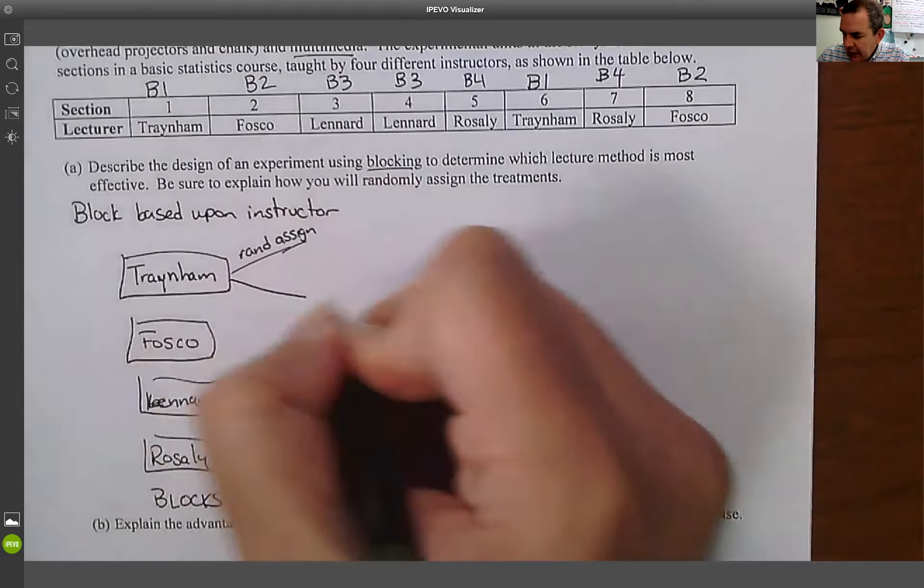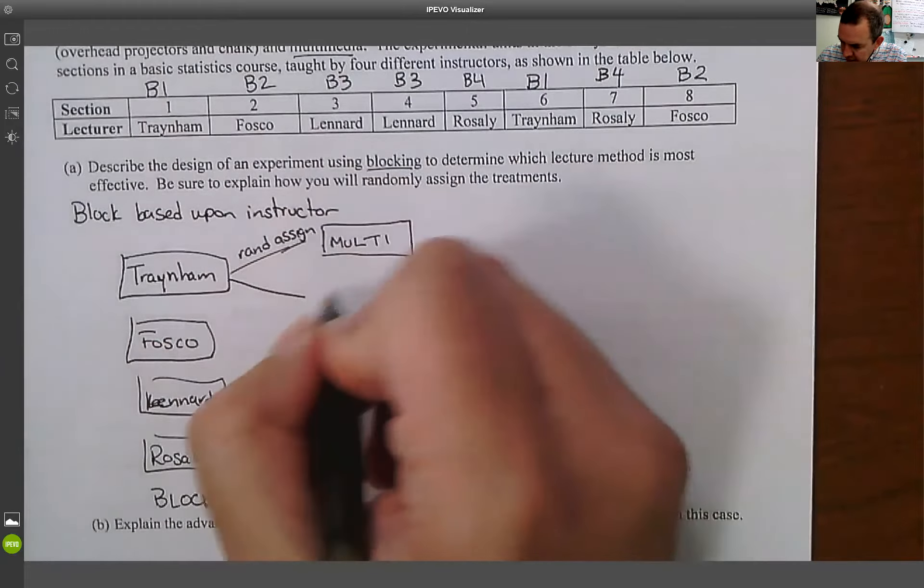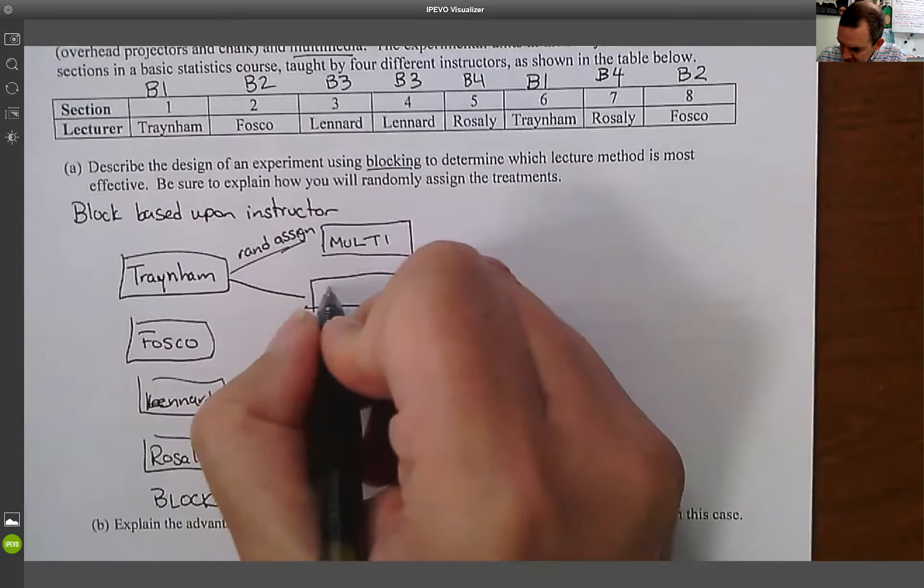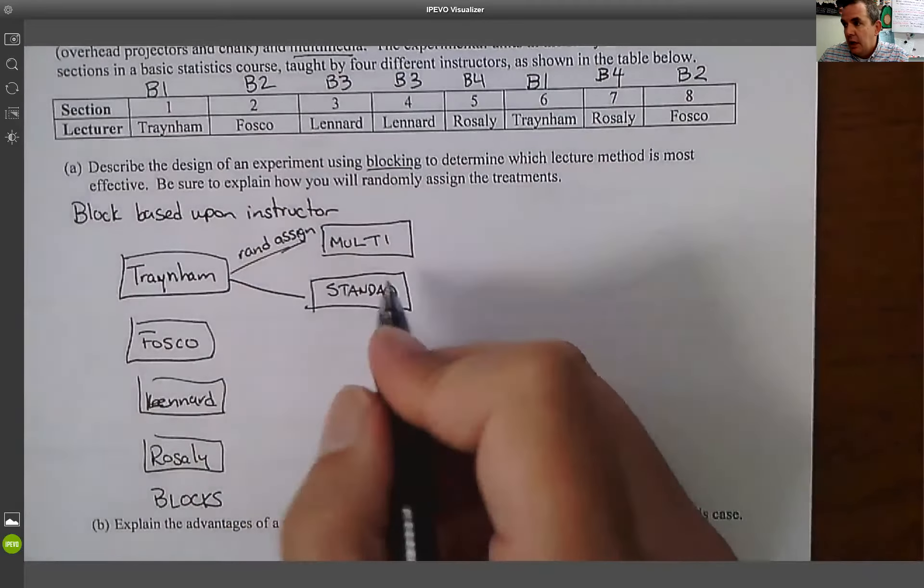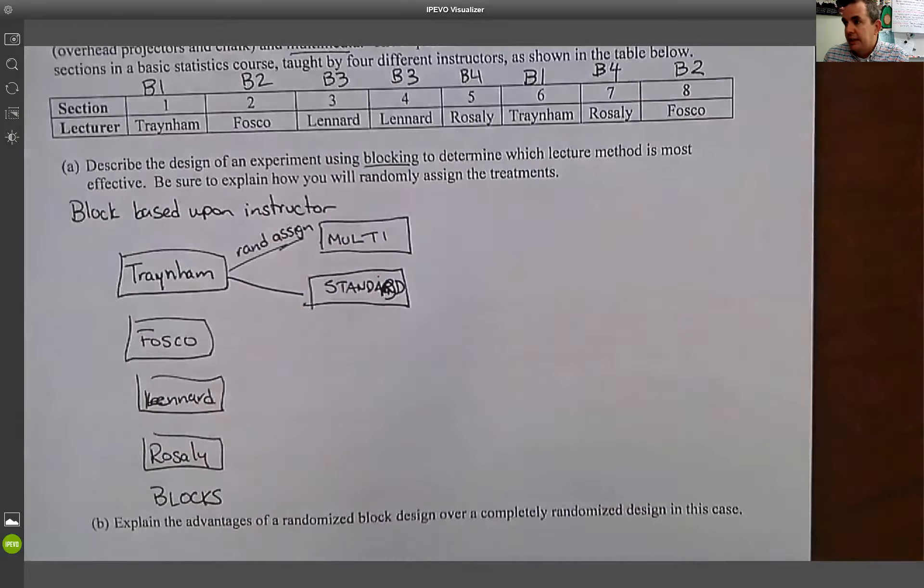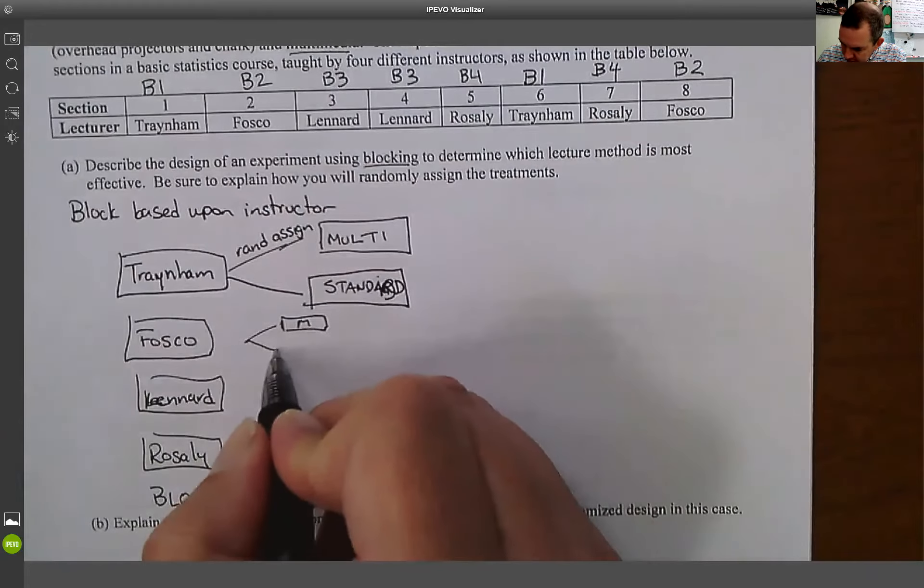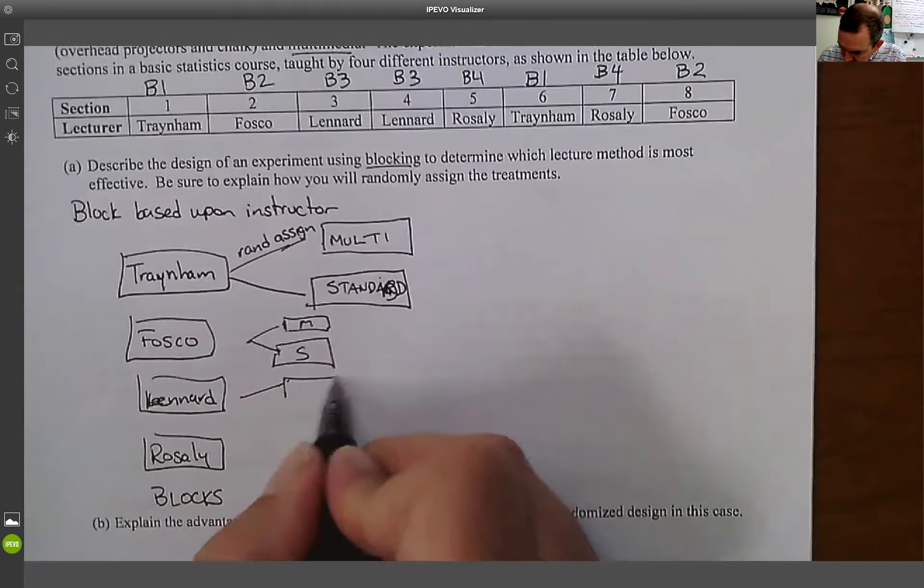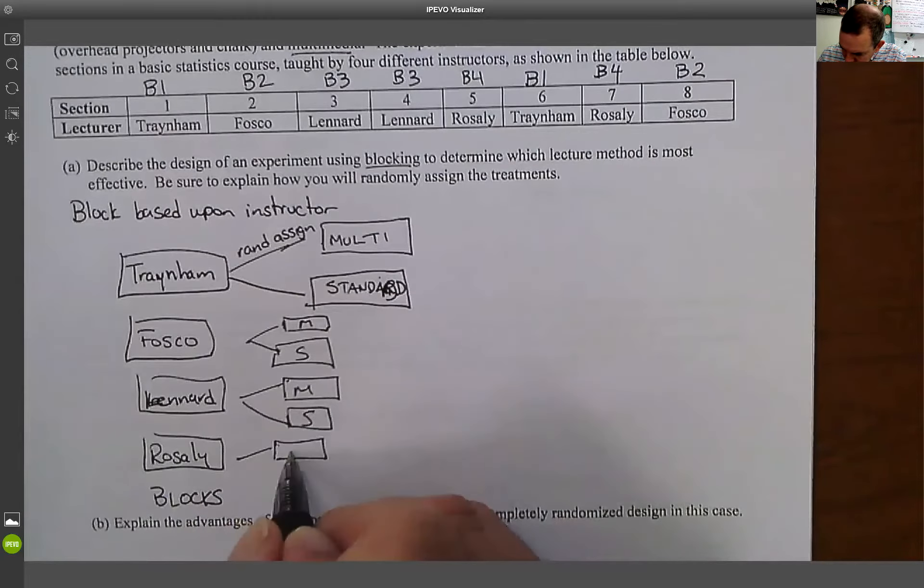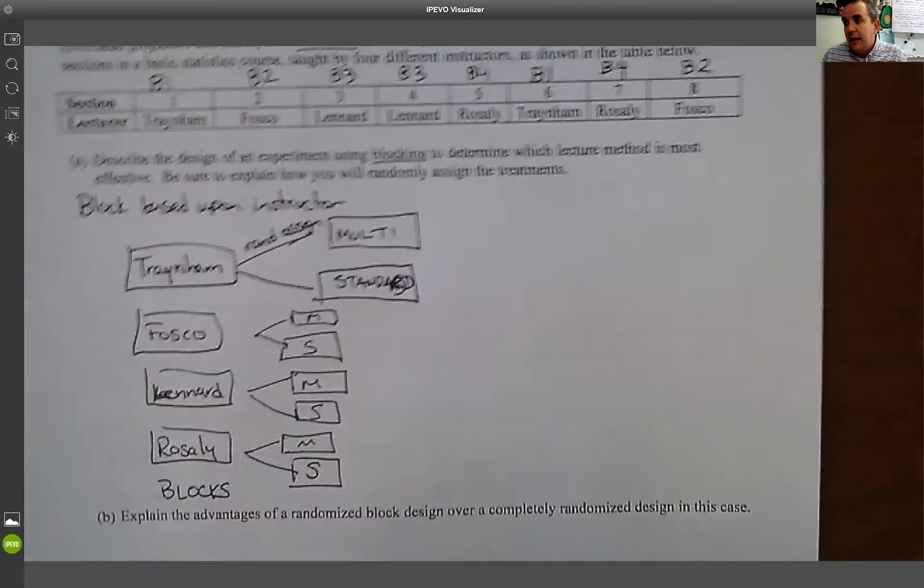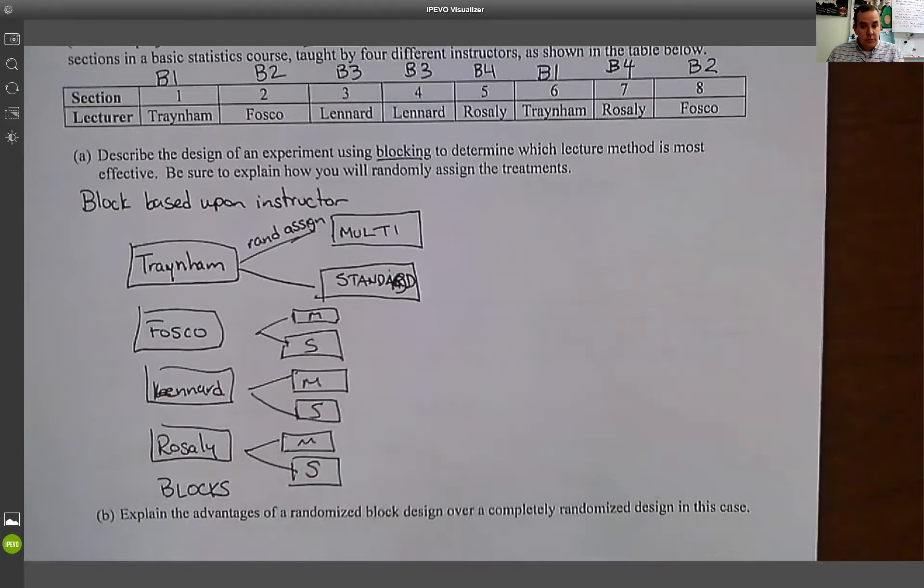And now what I'm going to do is I'm going to randomly assign. So what will happen is I'm going to do a random assign. And I'm going to assign one section to getting the multimedia, and one section to getting the standard. Okay. So what's happening here is, my writing is terrible here, writing into standard. And I'm going to do the same thing for each one of these. So multi-standard, multi-standard, multi-standard. Okay.